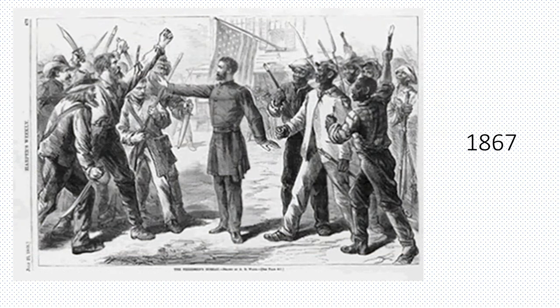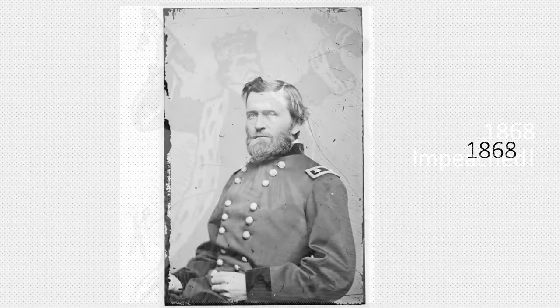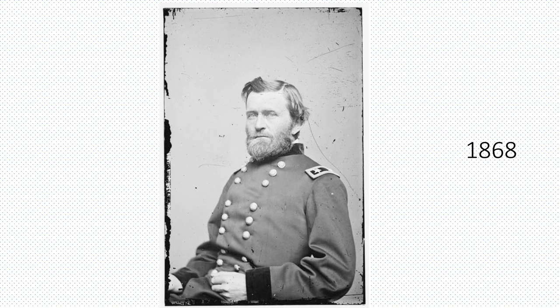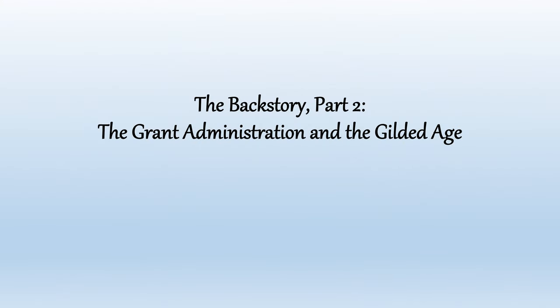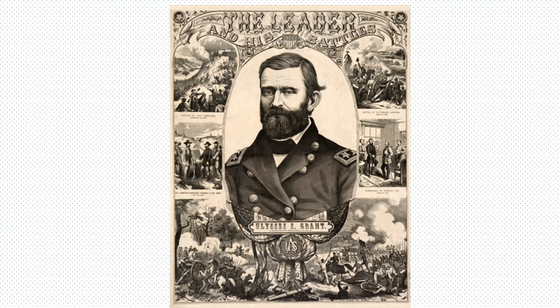1867 saw Congress force a new military occupation of the South in another attempt to restore order there. And in 1868, Congress impeached President Johnson and passed the 14th Amendment, as well as got Northern war hero Ulysses S. Grant elected President. Grant's presidency started off in 1869 with supporting the passage of the 15th Amendment and starting the process of shutting down the Ku Klux Klan. By 1871, both had been accomplished, which seemed to put an end to the need for continued national focus on the regional issues of Reconstruction.